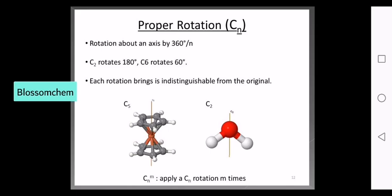Each rotation brings the molecule to an orientation indistinguishable from the original. The proper rotation axis is denoted CN. For example, C5 corresponds to a pentagon shape, rotating by 360/5 = 72 degrees.